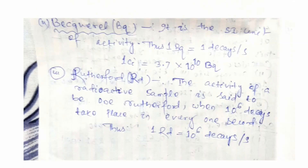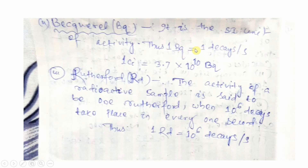Another famous unit for radioactivity is the Becquerel, written in short form as Bq. Becquerel was a famous scientist who gave important laws regarding radioactivity, and the unit is named after him. The Becquerel is the SI unit of radioactivity. One Becquerel equals one decay per second.